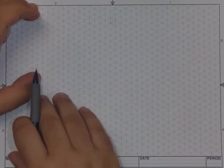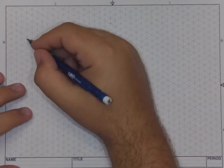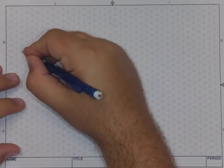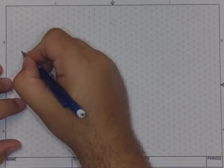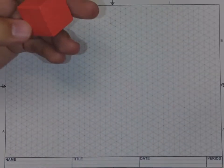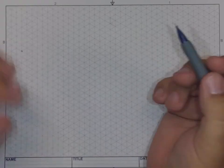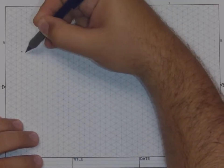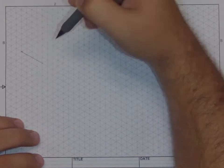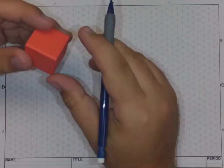I'm going to start up here in the upper left-hand corner to sketch this cube, because in future videos I'm going to add more objects to this paper. I'm going to mark a starting point at one intersection, and count for an inch: one, two, three, four.